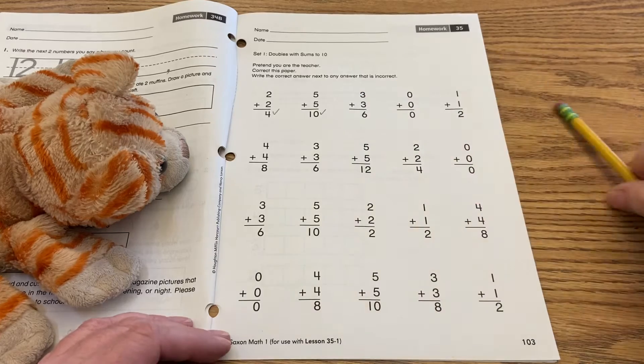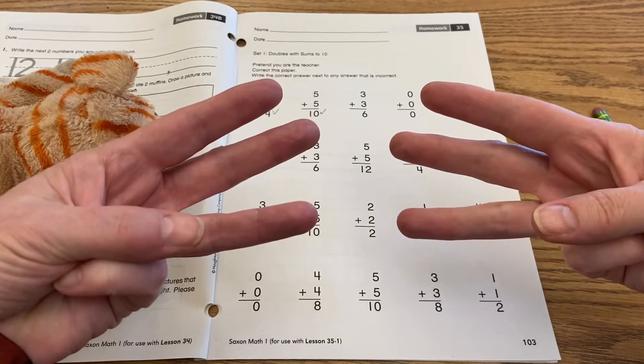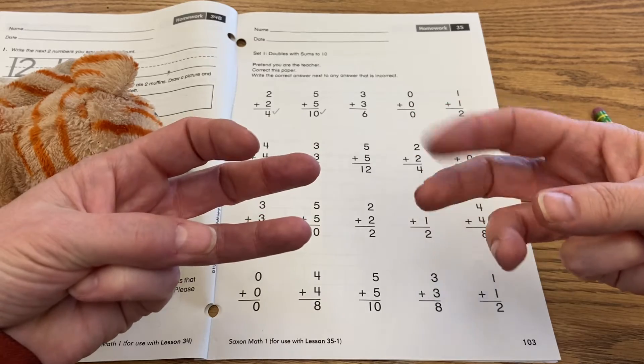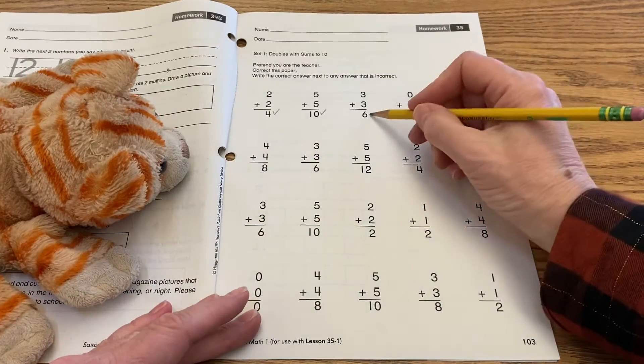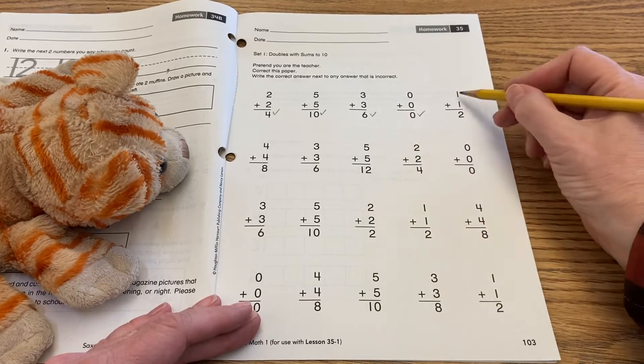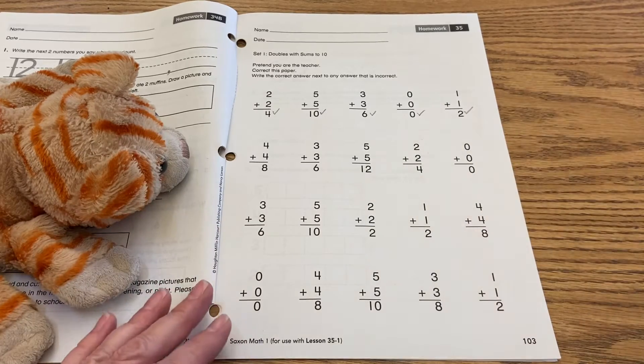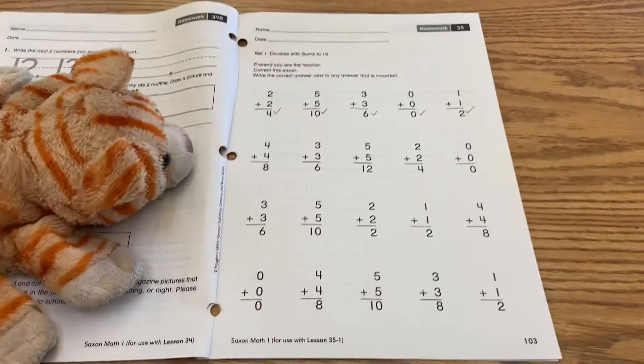So does three plus three equal six? One, two, three, one, two, three, one, two, three, four, five, six. See, I can use my fingers and yes, that's correct. Does zero plus zero equal zero? Yes. Does one plus one equal two? Yes. So so far CaliCat has done pretty well. Let's see how we're going.